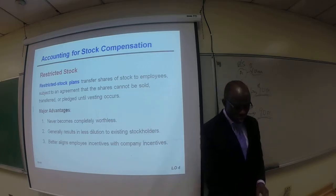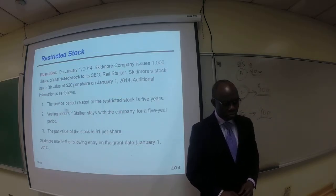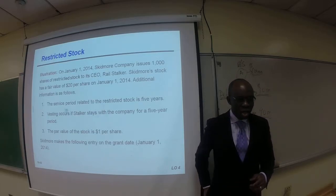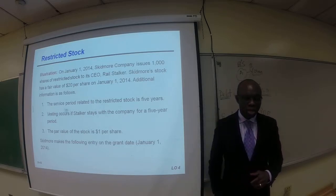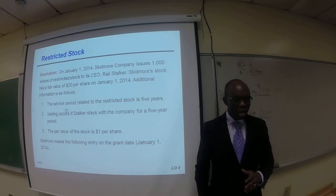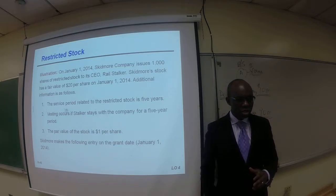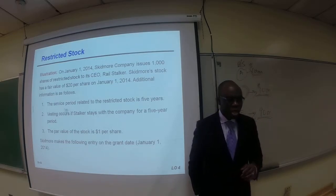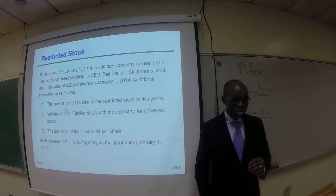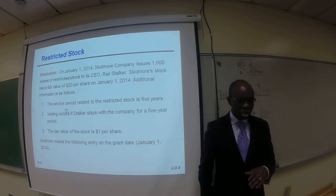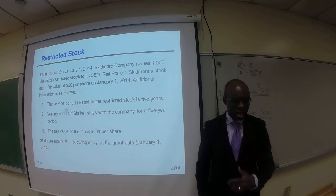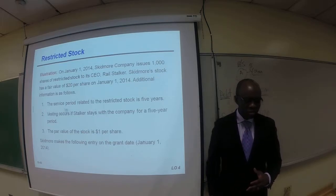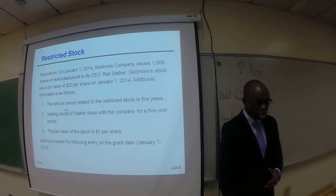Here are the major advantages — you can go through those on your own. Here is an example of a restricted stock. This company issued 1,000 shares of restricted stock to the CEO. The stock has a fair value of $20 per share on January 1st, 2014. The service period related to the restricted stock is five years — vesting occurs if the employee stays with the company for that five-year period. The par value of the stock is $1 per share. So the company makes the following entry on the date of grant.